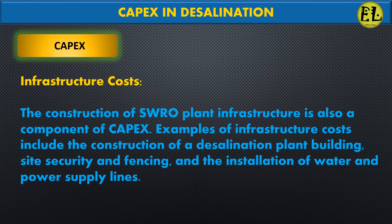Infrastructure costs: the construction of SWRO plant infrastructure is also a component of capex. Examples include the construction of a desalination plant building, site security and fencing, and the installation of water and power supply lines.